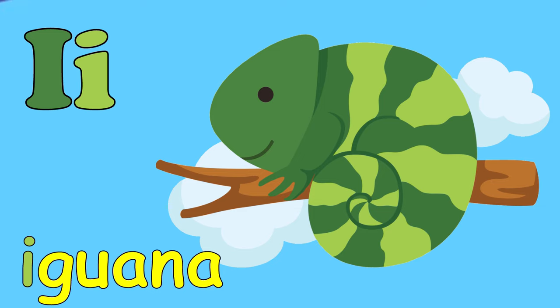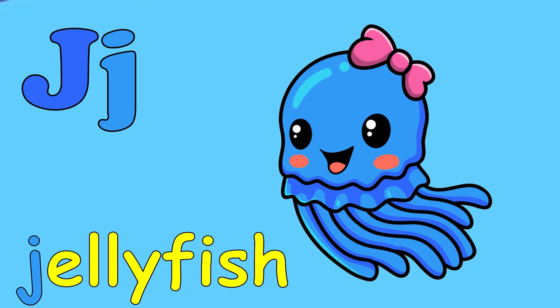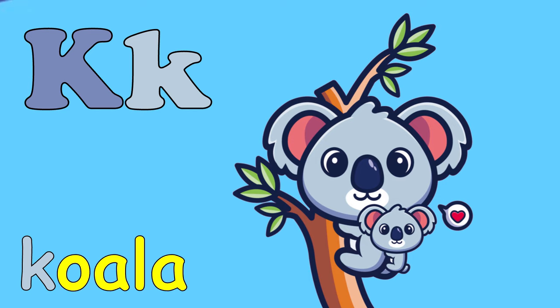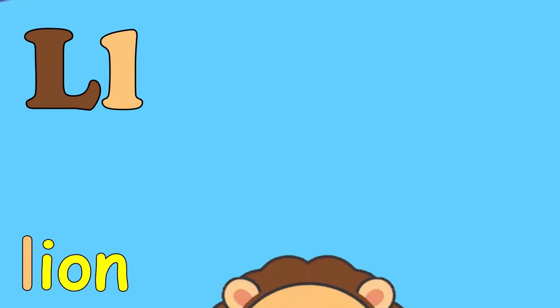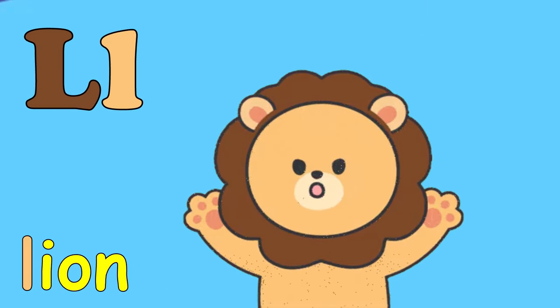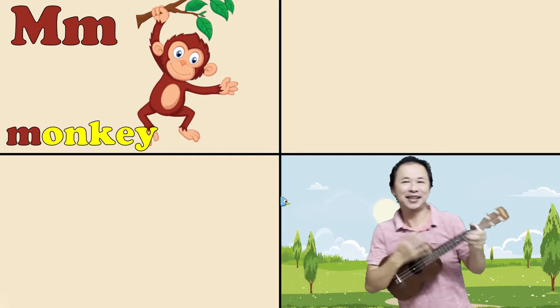I is for iguana, e. J is for jellyfish, j. K is for koala, k. L is for lion, l. M is for monkey, m.